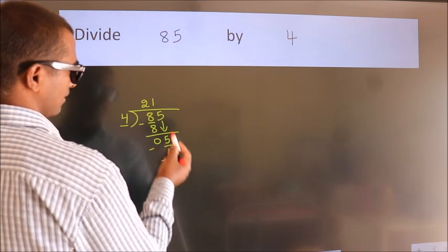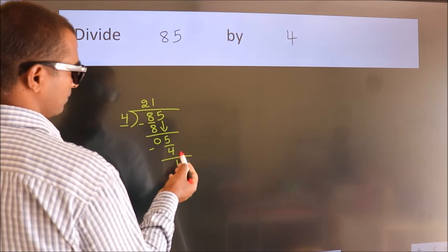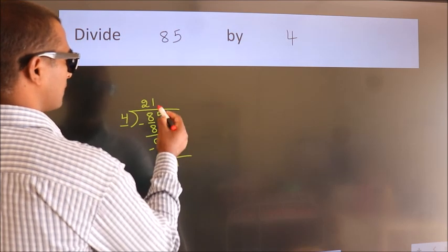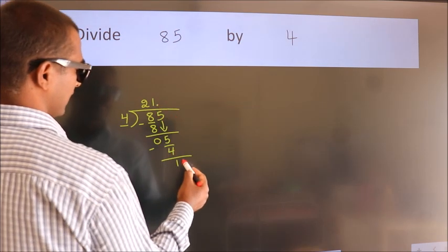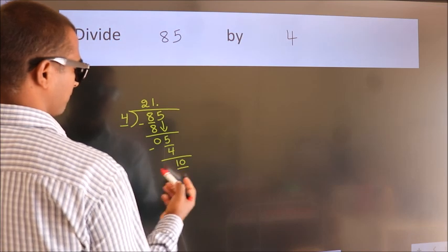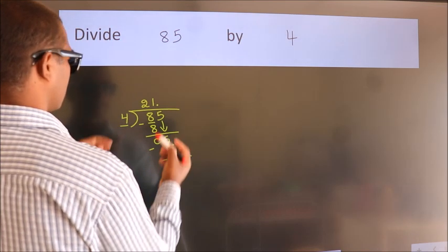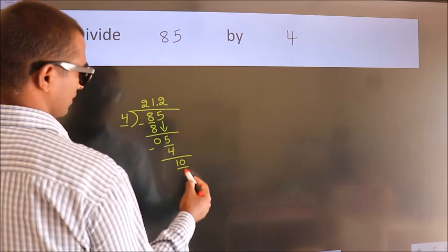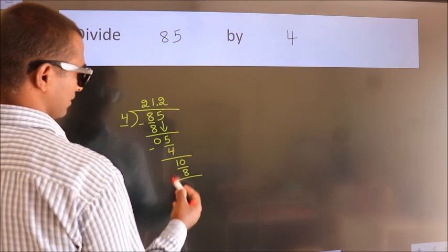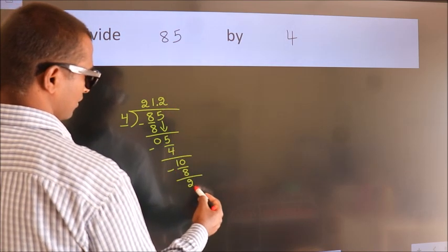After this, there are no more numbers to bring down. So what we do is put a dot and take 0, making it 10. A number close to 10 in the 4 table is 4 times 2, which is 8. Now we subtract and get 2.